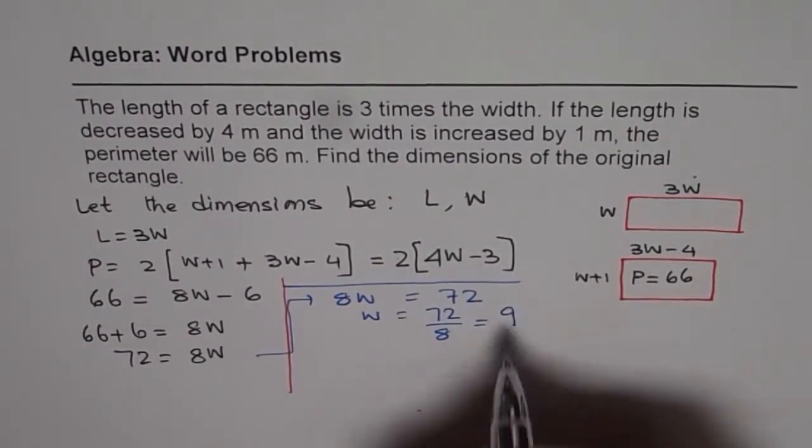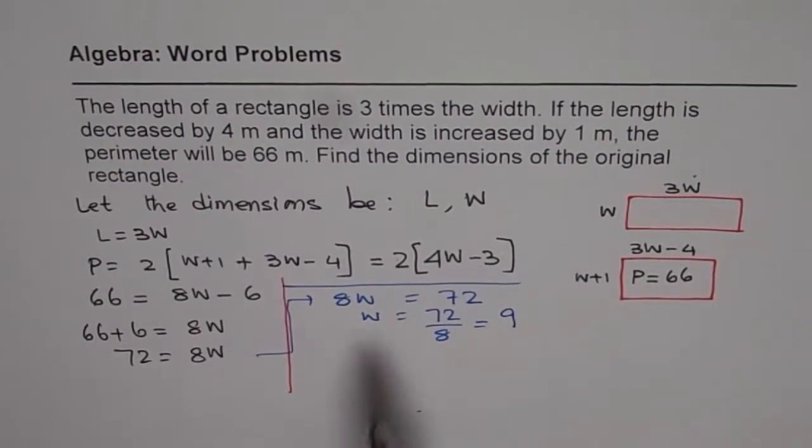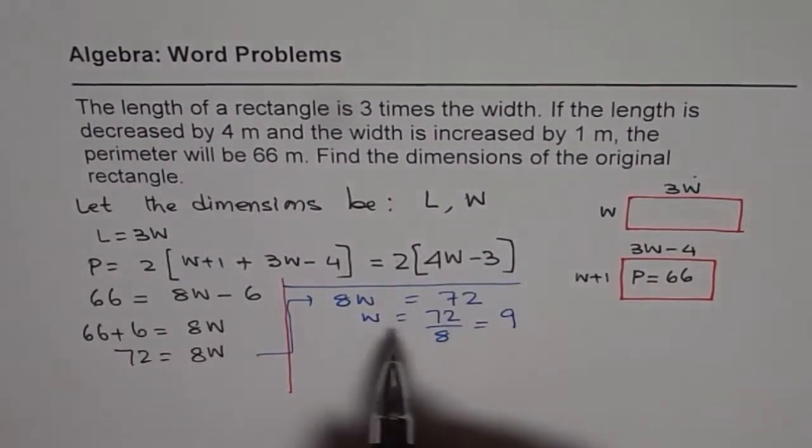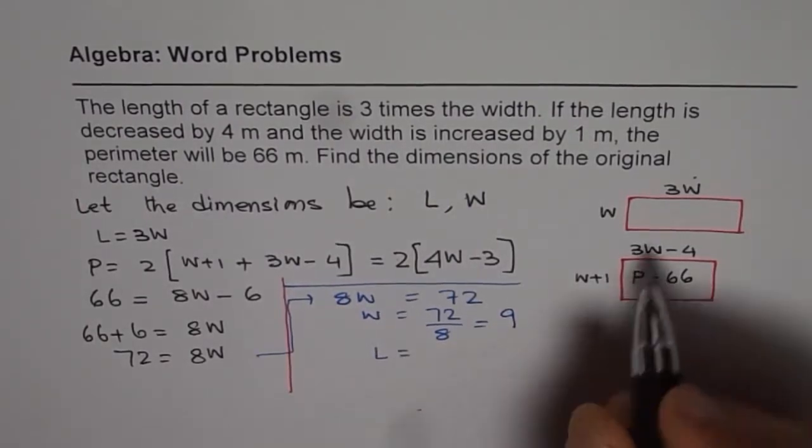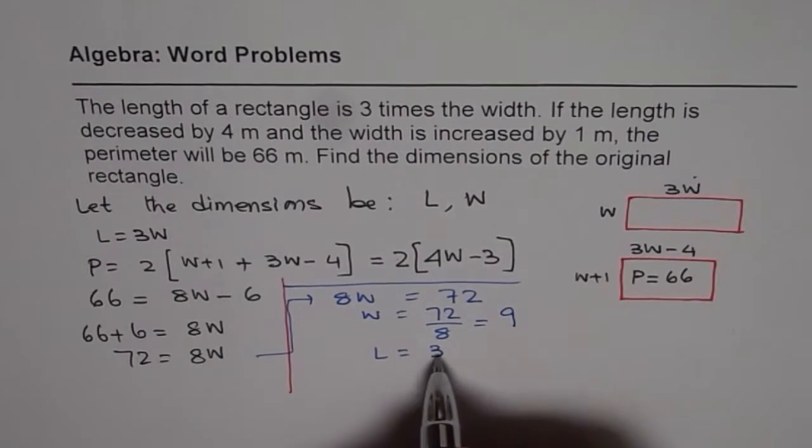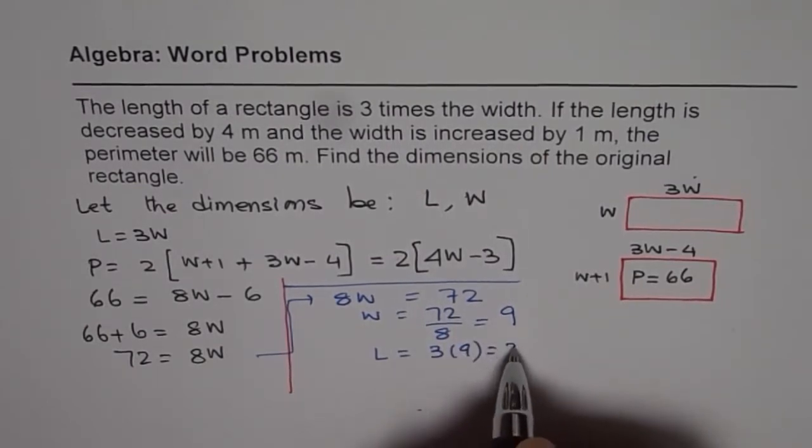So we know width is nine. Find dimensions of original rectangle. In original rectangle, width is 9, and the length is three times 9, which is 27.